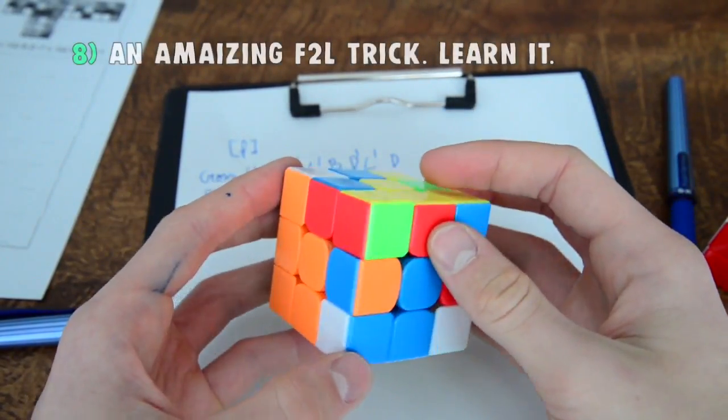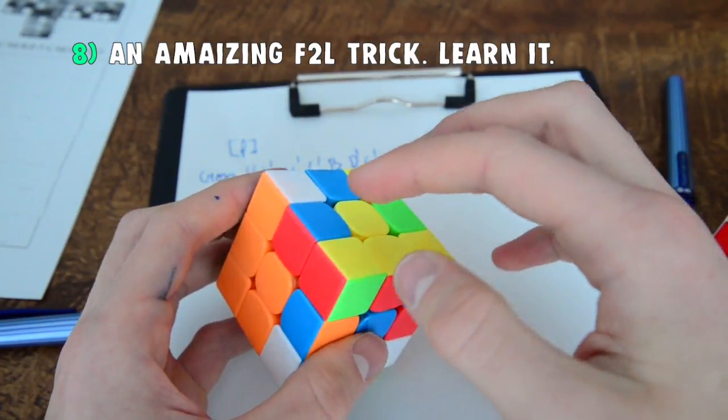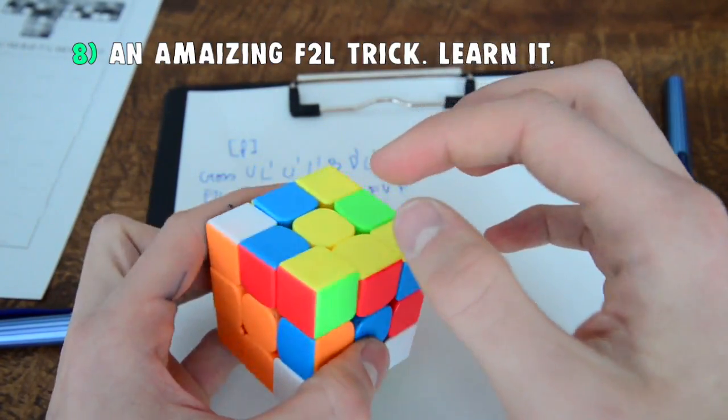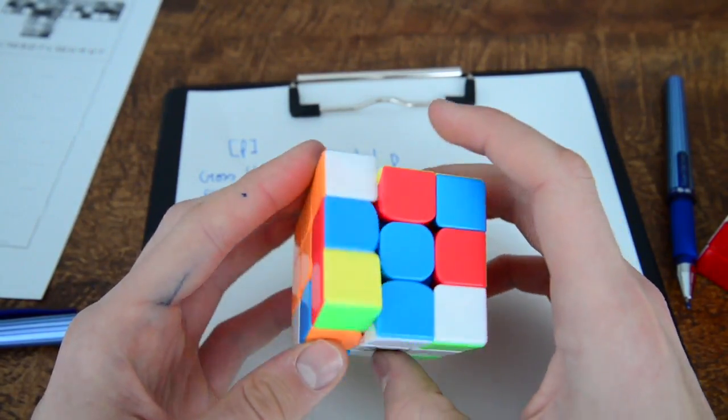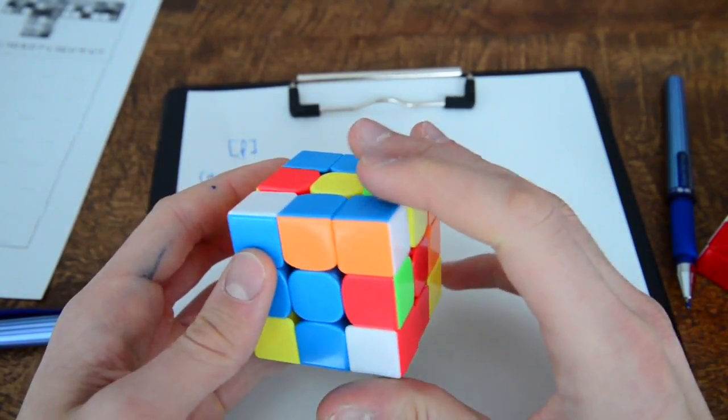Okay, so while we're here I'm just going to show you a little F2L trick. As you can see these two need to get out of the place so we can just do a sledgehammer by doing it. As you can see they connect themselves.